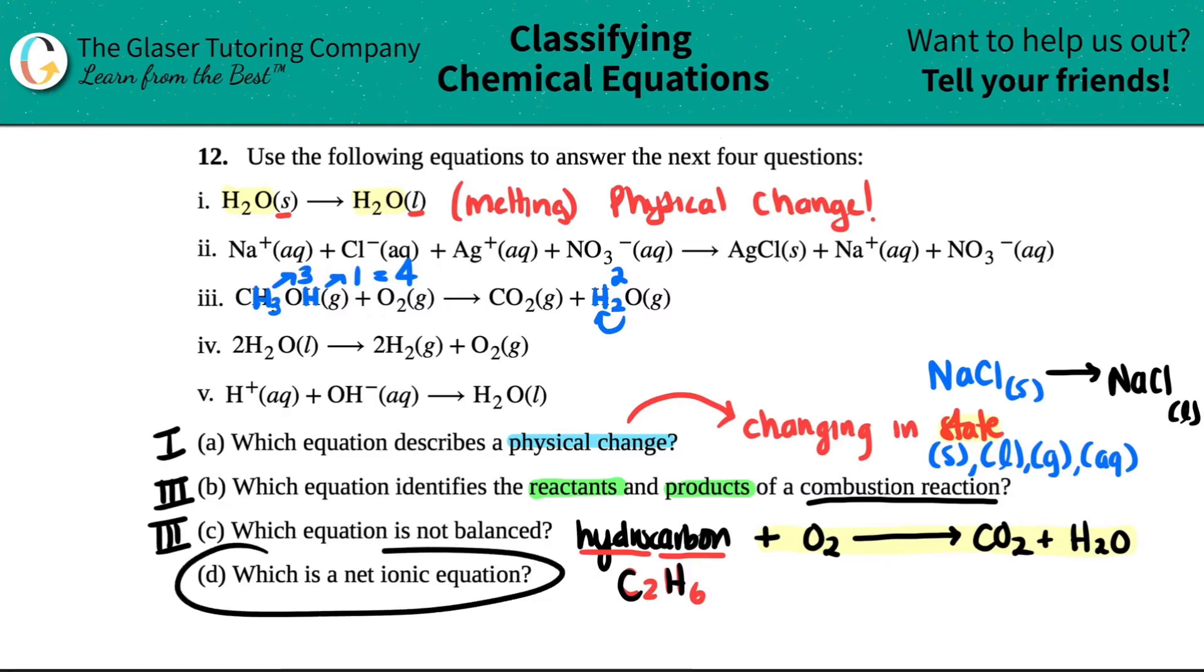The last one, which is a net ionic equation. Just know that a net ionic equation is the sum of your total ionic equation. Your net ionic equation has no spectators. They have no spectator ions. It's in its final equation where nothing can be canceled out.